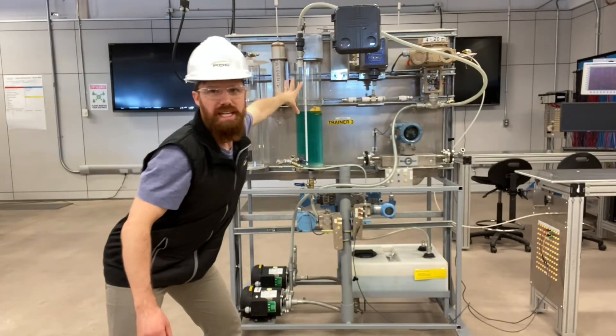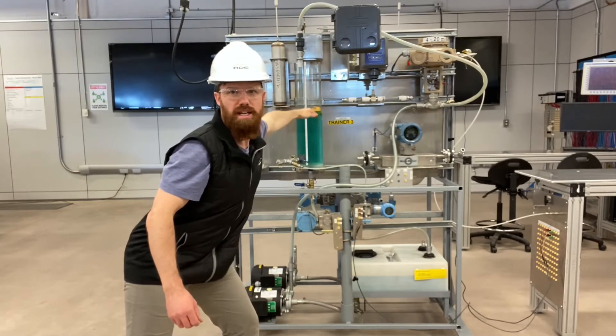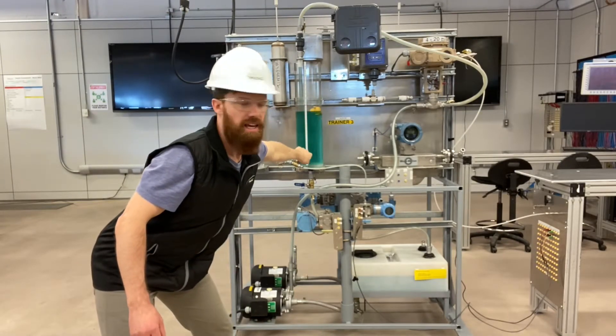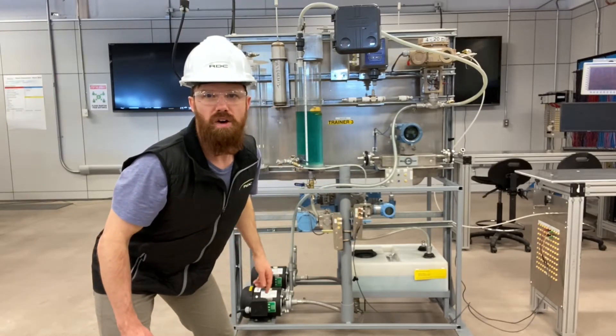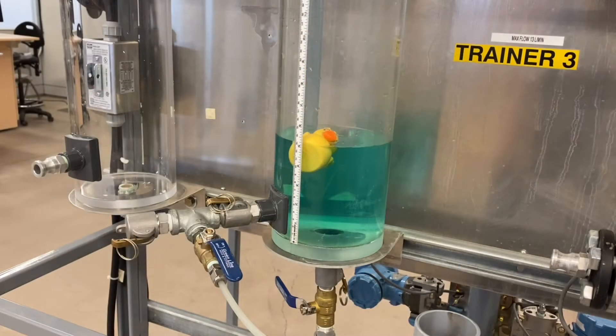From this hose, it flows into our tank where we're controlling level right here, and then out of the tank, it flows back into where it came from in that white tank at the bottom, and then just keeps continuing around. In the vessel that we're controlling level in, we have our little friend here, Dan the Duck, he's going to be riding the level with us.